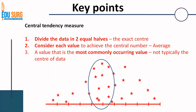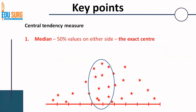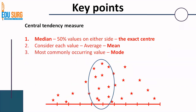These three are the measures of central tendency, or the blue area. The first — the exact center — is basically the median, where 50% values are on either side. Considering each value and calculating an average is basically the mean, and the most commonly occurring value is the mode. Mean, median, and mode explain the characteristics of the center of the data, and that is why they are known as measures of central tendency. Whenever you are asked about descriptive statistics, the first concept is sample distribution, then the measures of central tendency — mean, median, and mode.